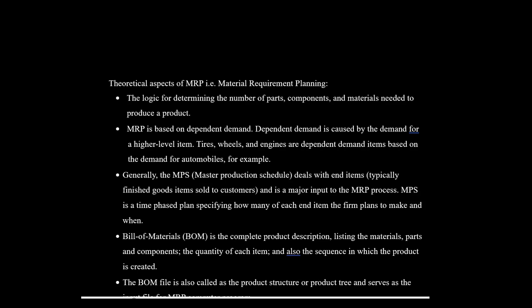What is MRP? It is the logic of determining the number of parts, components and materials needed to produce a product. MRP is based on dependent demand. The dependent demand is caused by the demand for higher level items. For example, tires, wheels, and engines — their demand depends on the demand for automobiles. Generally, the MPS, which is Master Production Schedule, deals with the end items — typically the finished goods — and is a major input for MRP.